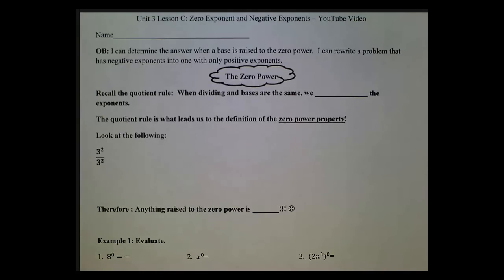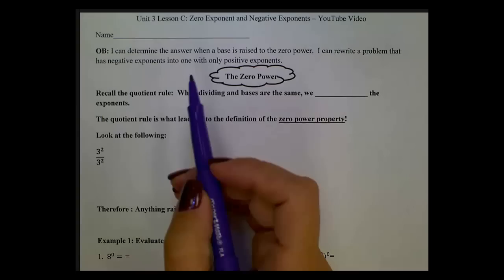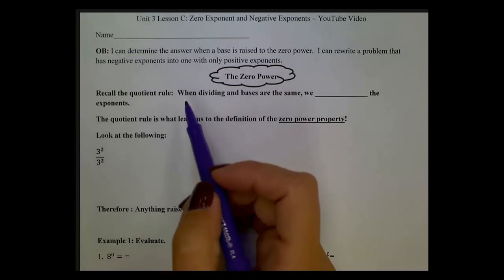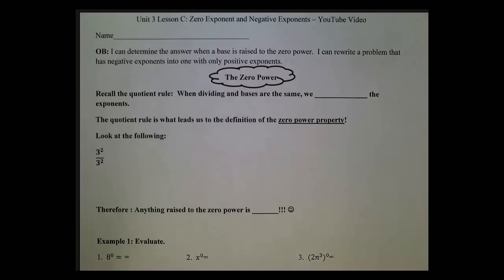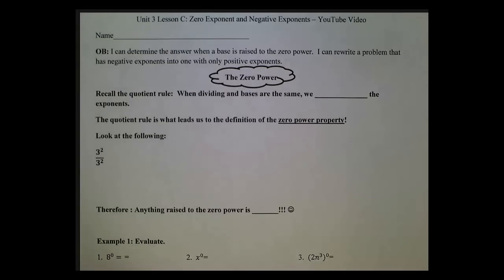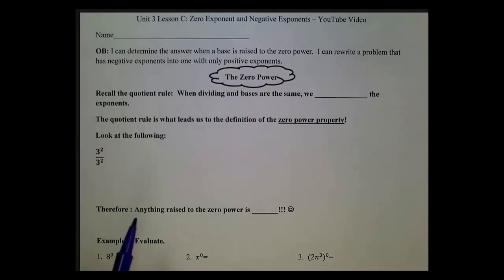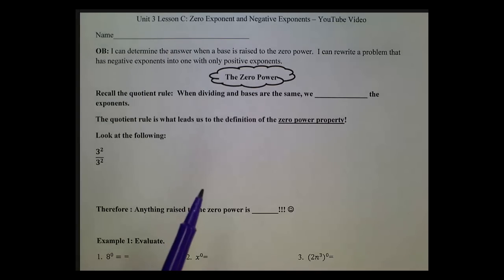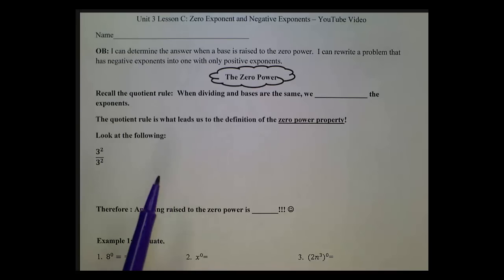Today we are looking at lesson C from unit 3: zero exponents and negative exponents. The objective — by the end of this section, you should be able to say: I can determine the answer when a base is raised to the zero power, and I can rewrite a problem that has negative exponents into one with only positive exponents.